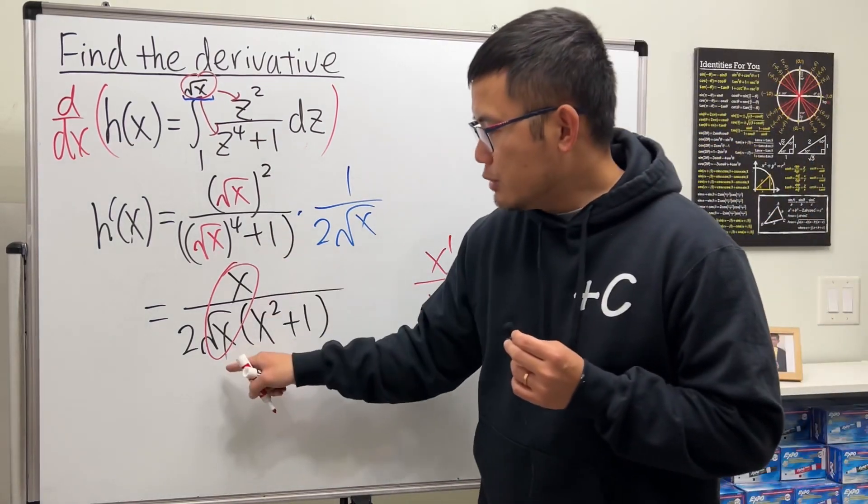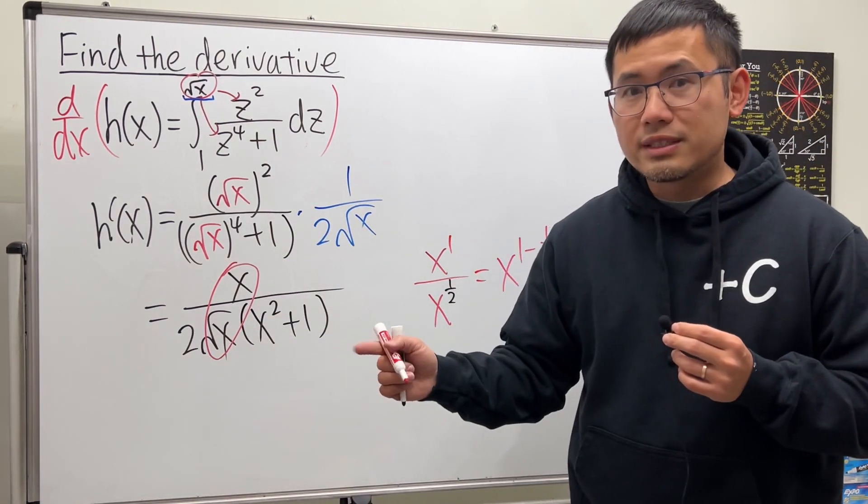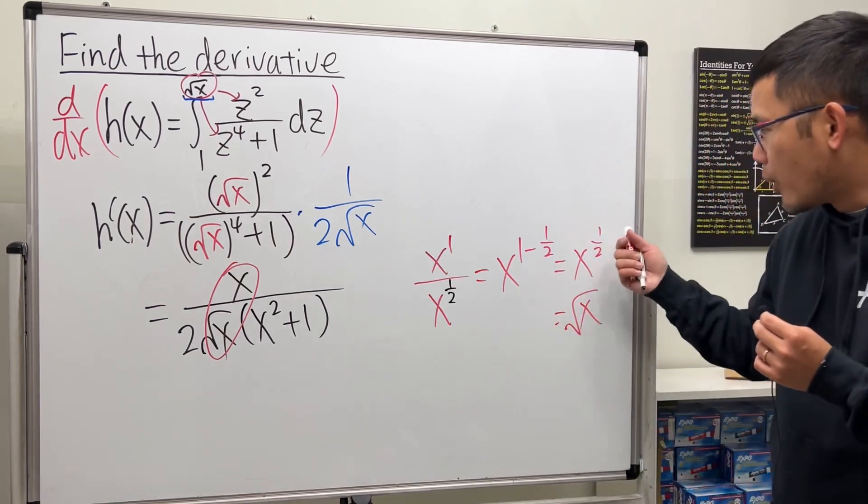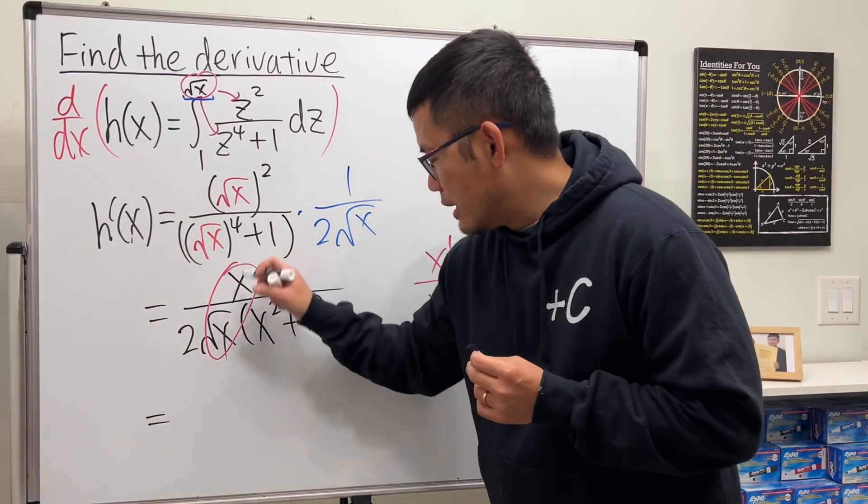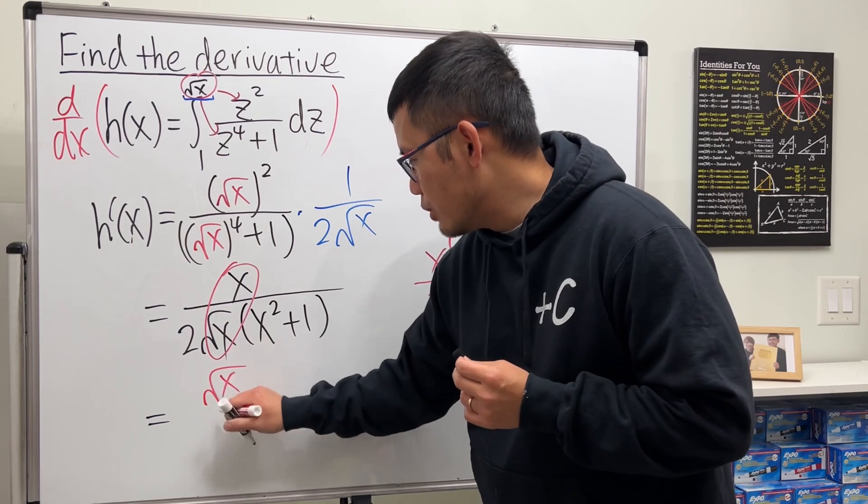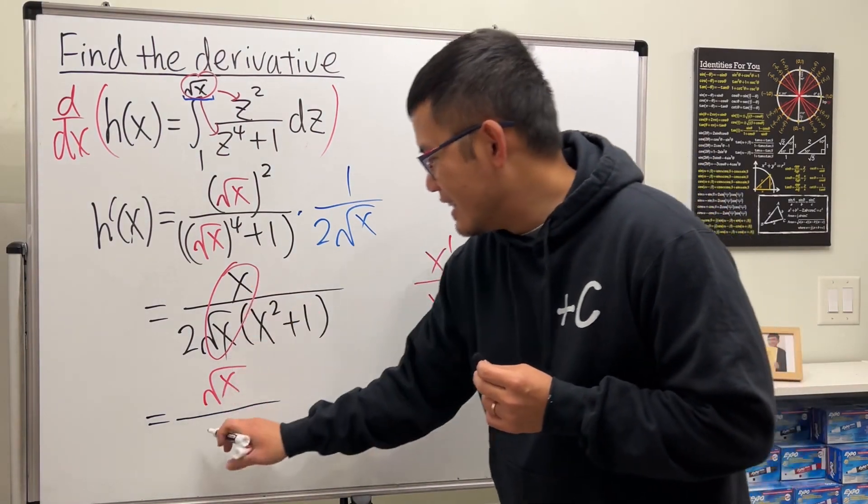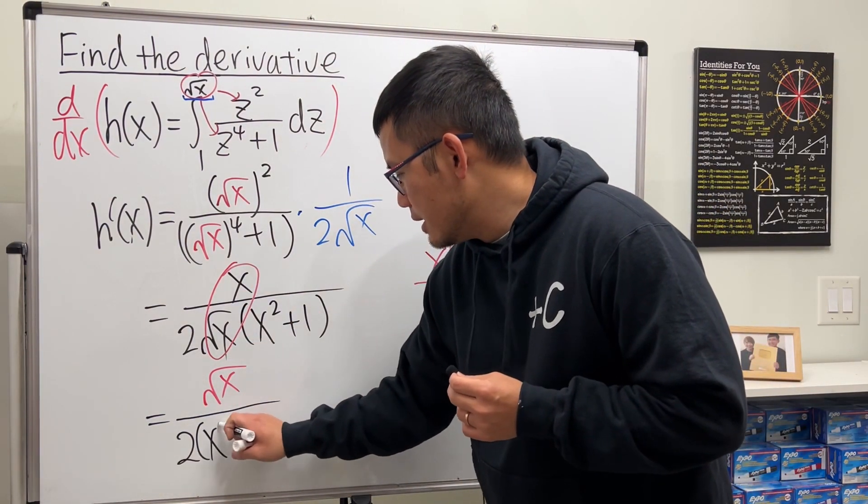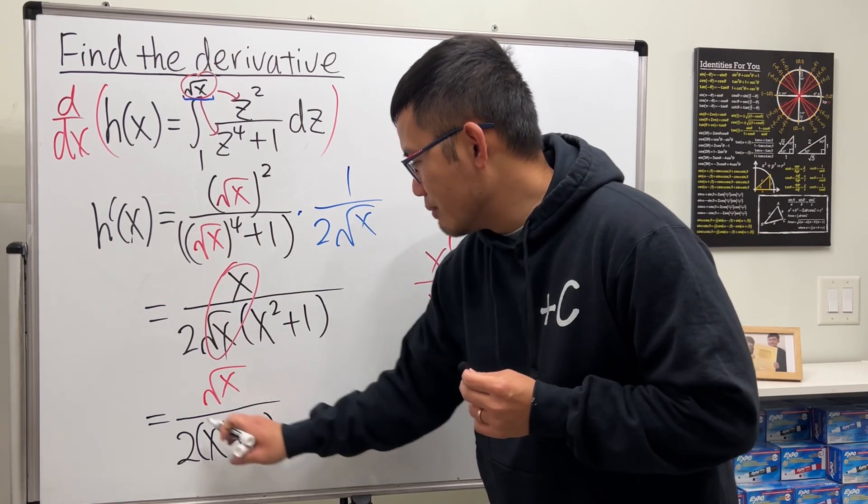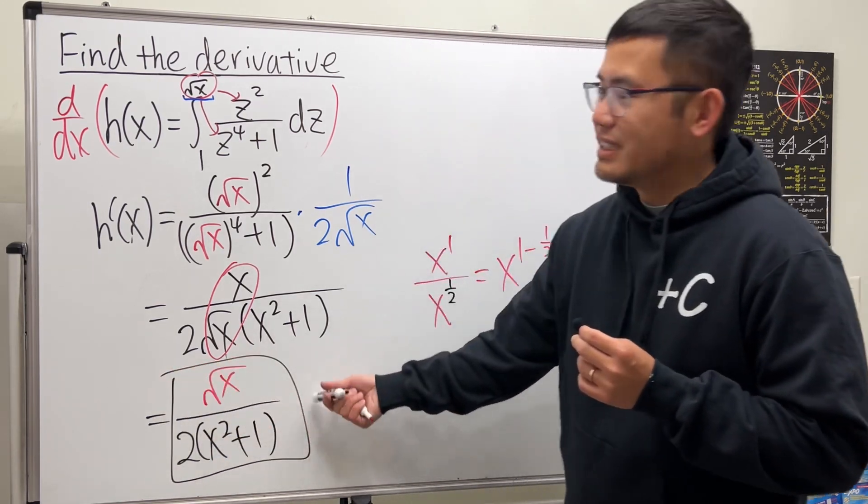So this reduces out to square root of x on the top, because the power here is positive. So that together gives us square root of x over that 2 times x squared plus 1. And that's it.